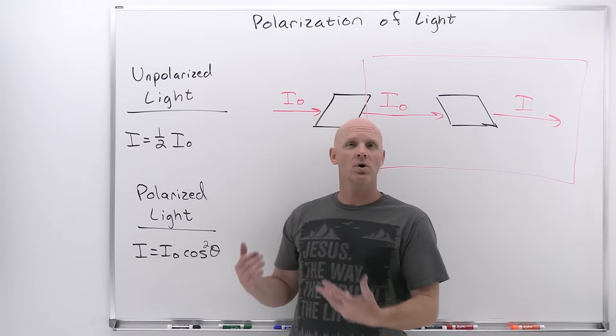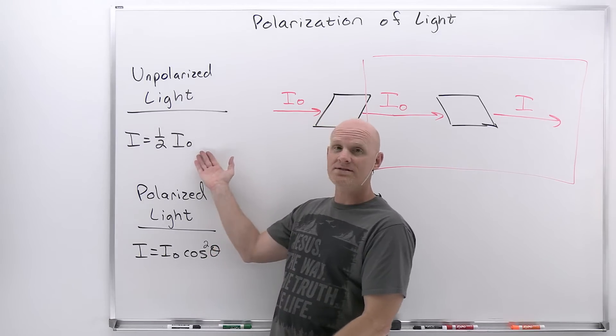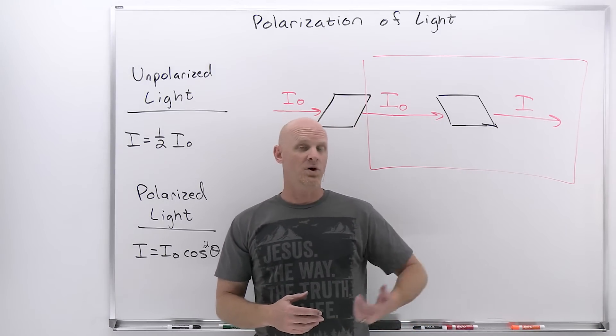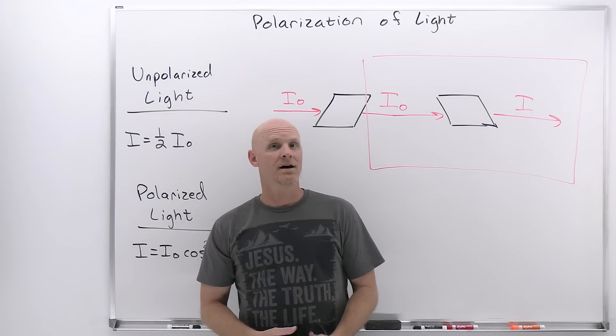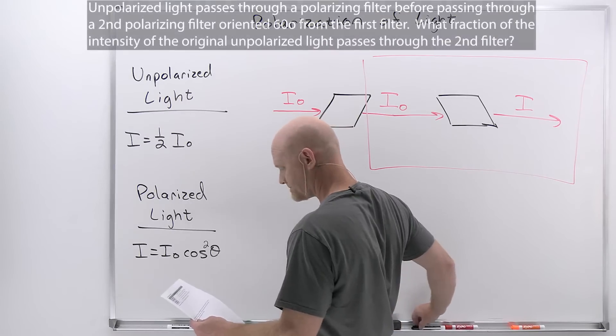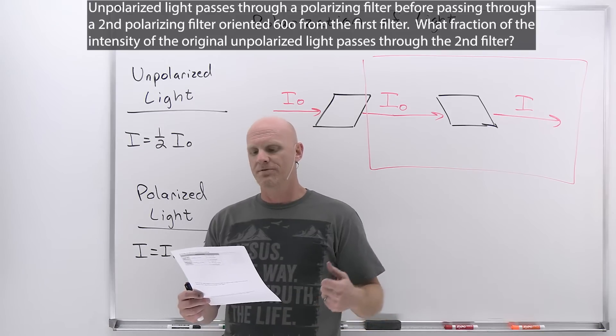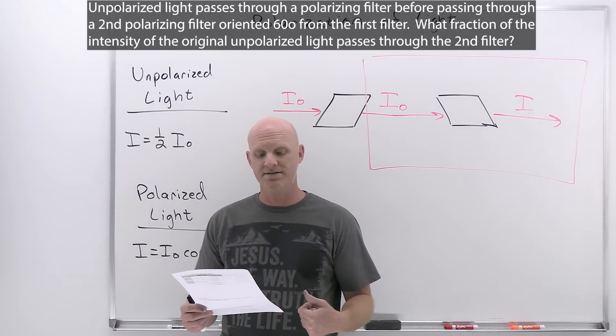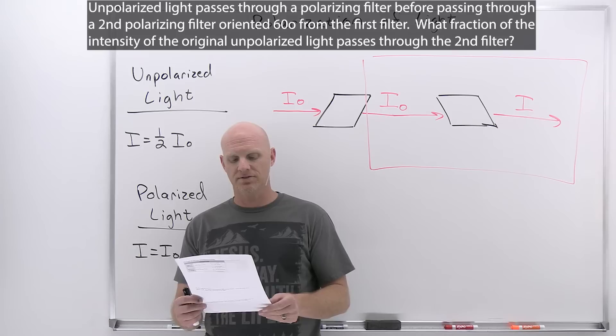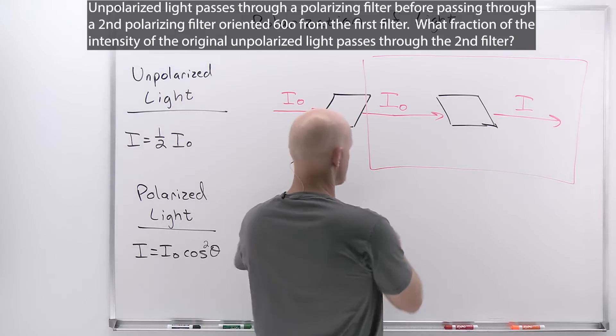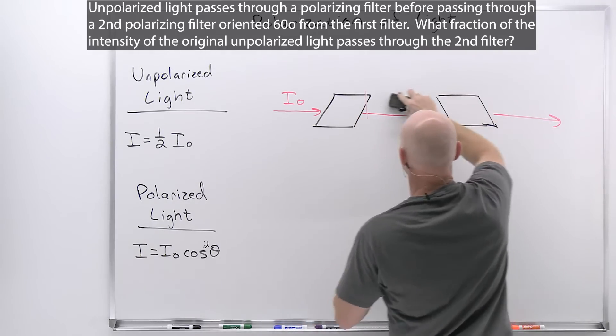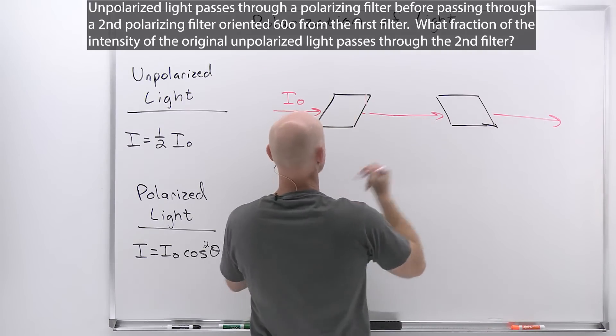These are the only two real equations governing our polarization process, and the key is you just got to know, am I polarizing unpolarized light, or am I polarizing light that's already been polarized, in which case I just need to know the angle between the orientation of the filter and the orientation of the light that's already polarized. Question we're going to do in this regard says, unpolarized light passes through a polarizing filter before passing through a second polarizing filter oriented 60 degrees from the first filter. What fraction of the intensity of the original unpolarized light passes through the second filter? It's a two part question here.